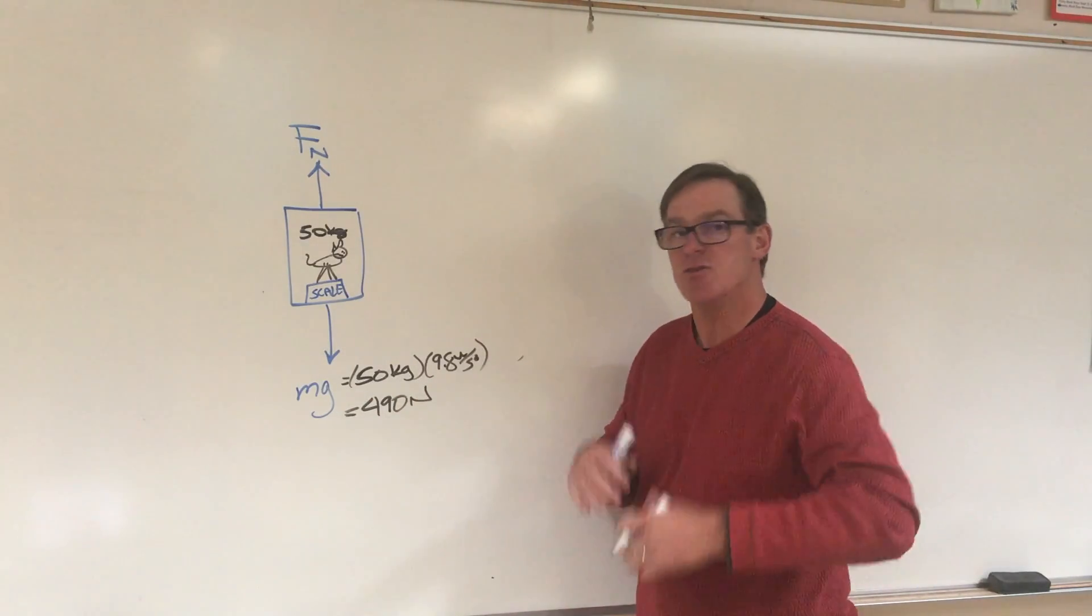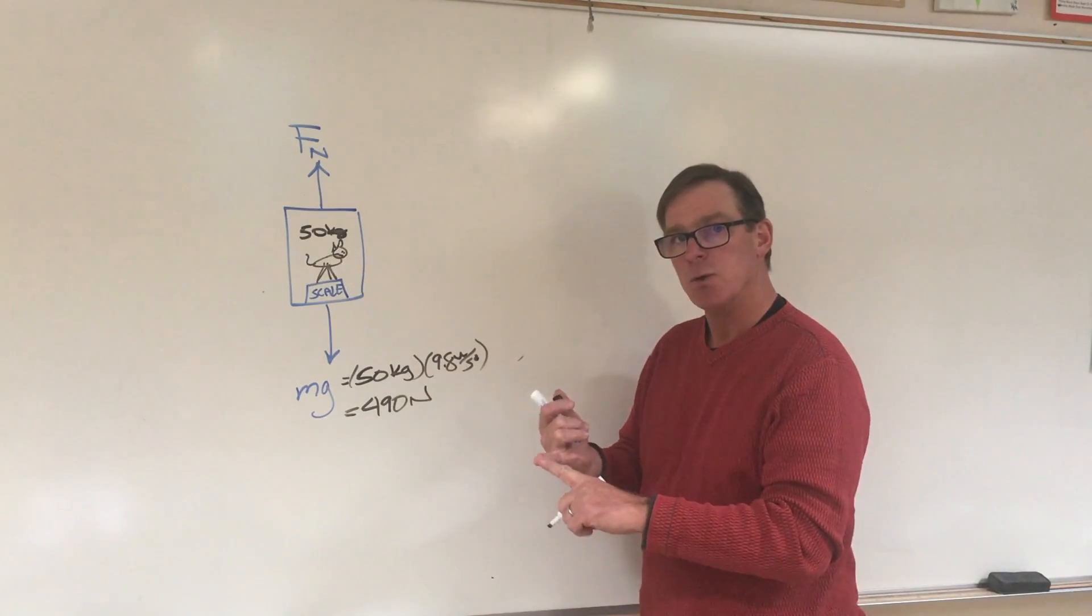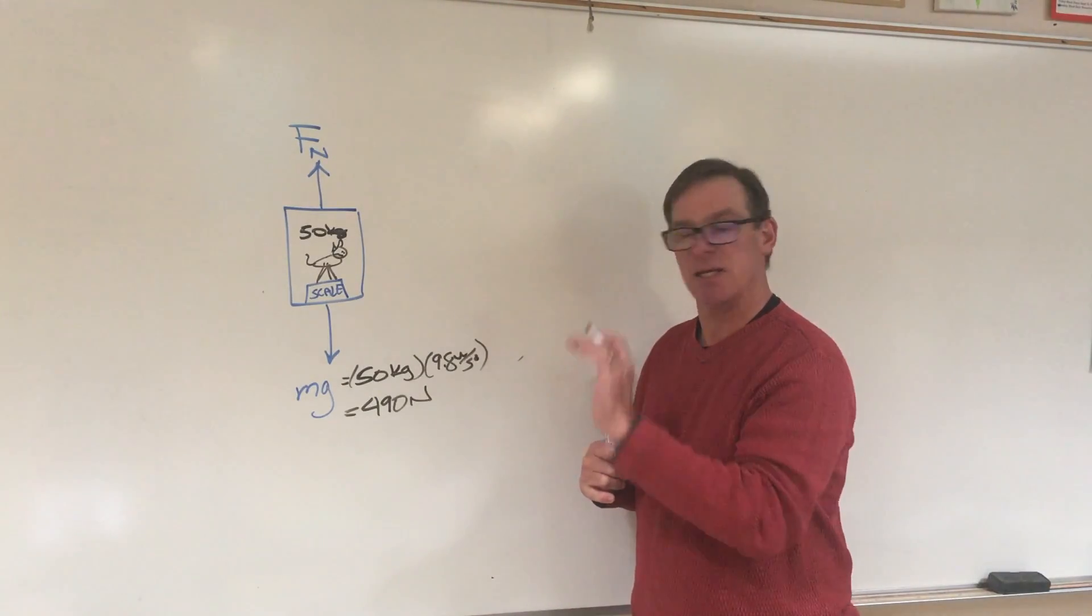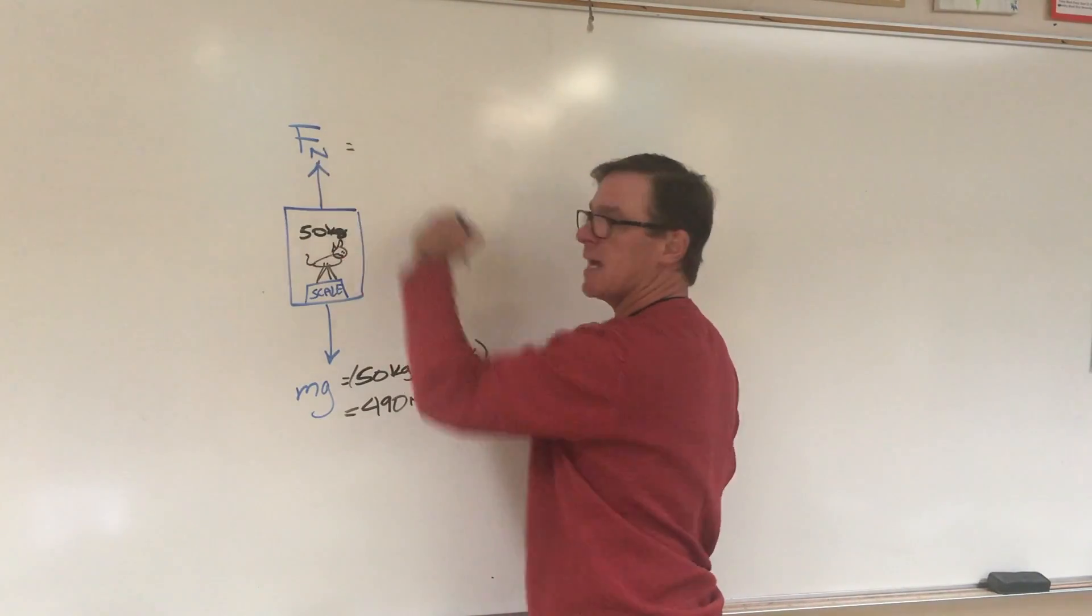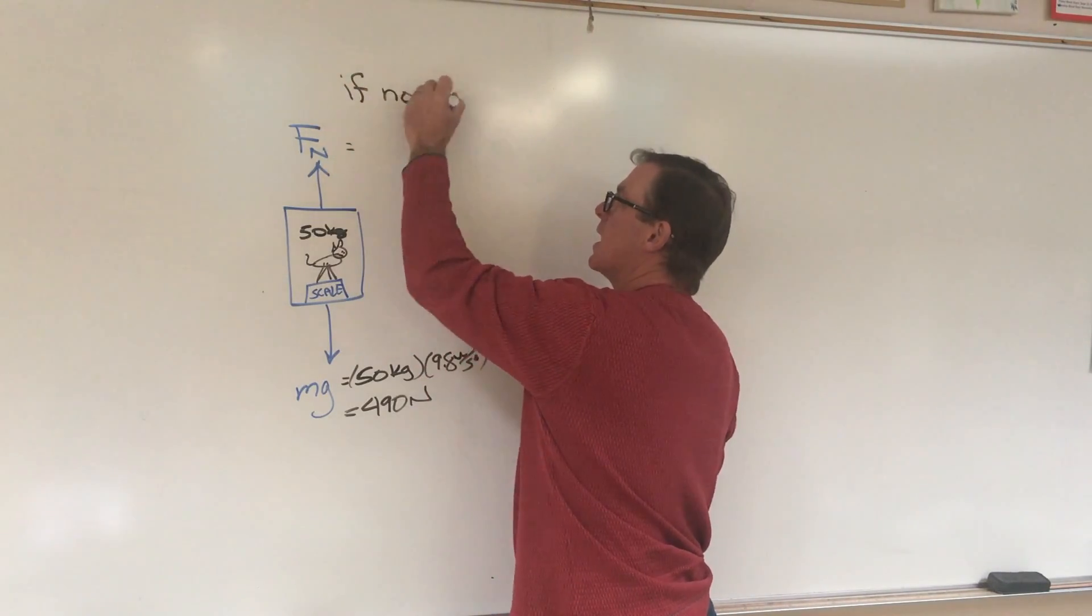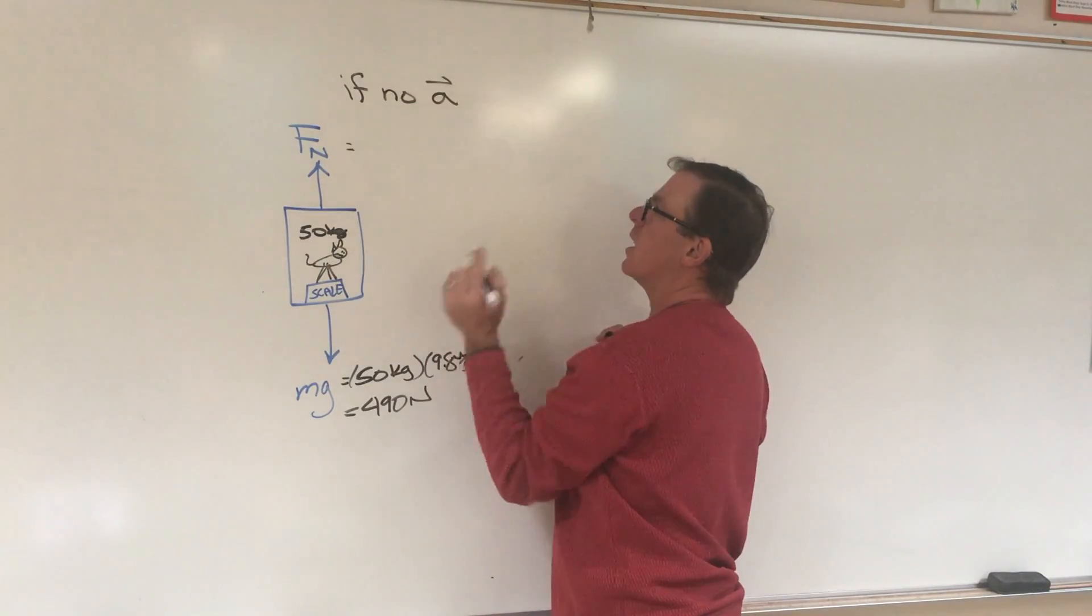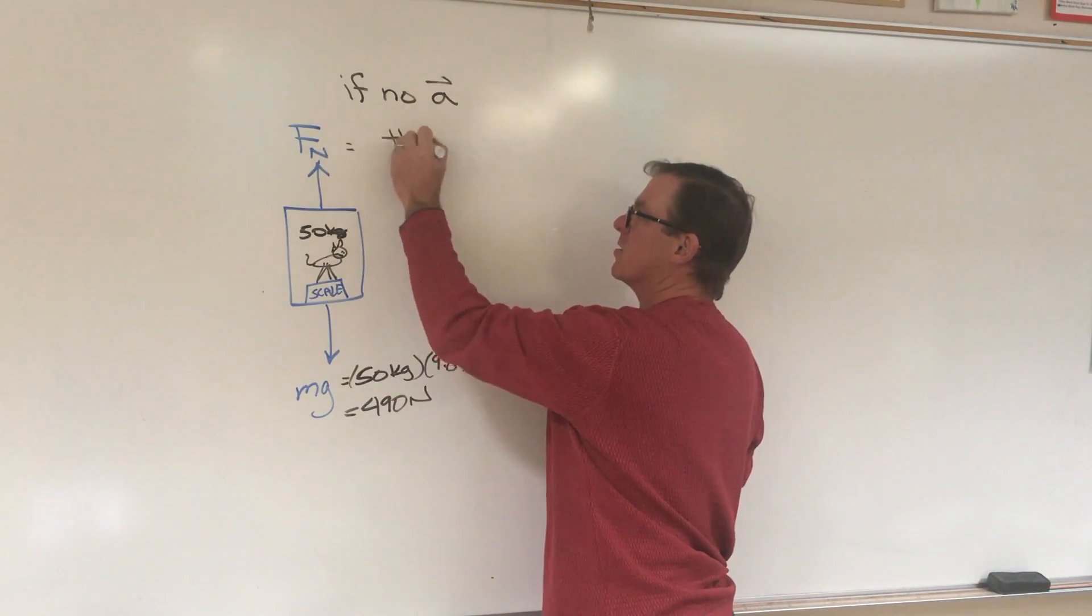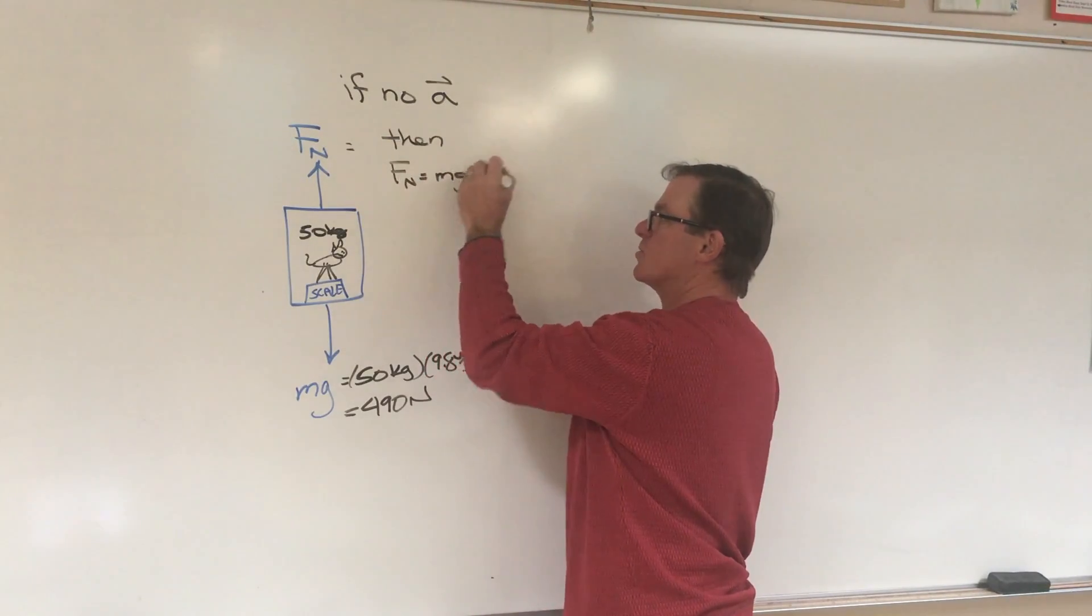So if the dog is not accelerating, either standing still or moving with constant velocity, either way, then we know that this would be the same. So if no A, no acceleration, then Fn equals mg equals 490.